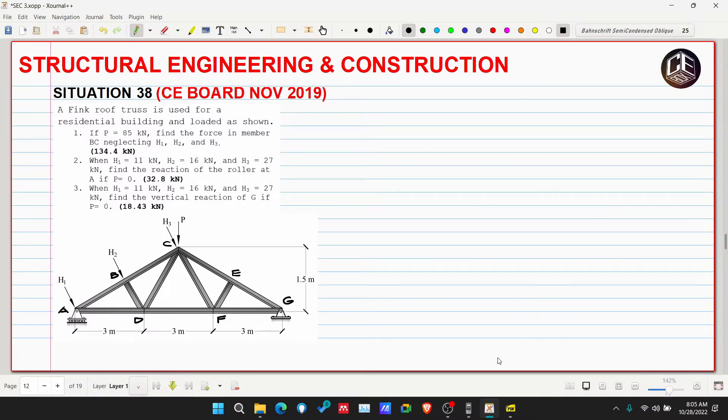Hey guys, welcome back to CBOX tutorial channel. This is situation number 38 from CE board exam November 2019 for structural engineering and construction. A pink roof truss is used for a residential building and loaded as shown. Number one: if P is equivalent to 85 kilonewtons, find the force in member BC, neglecting H1, H2, and H3.